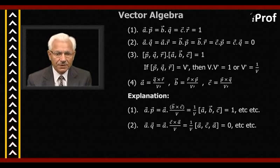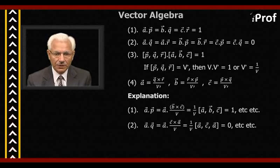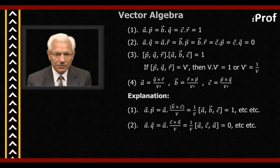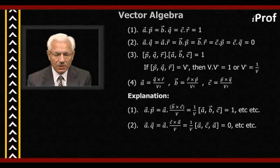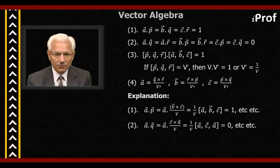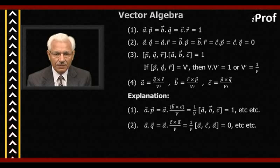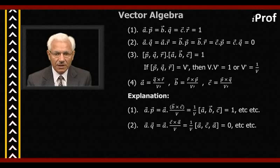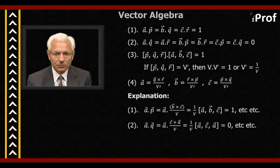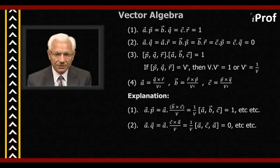The explanation of the above properties is as follows. First, A dot P equals — substituting the value of P — A dot (B cross C) divided by V. Pulling out one by V, we get A dot (B cross C), which becomes the triple scalar product of A, B, C, equal to one, because the triple scalar product of A, B, C is also equal to V. Similarly, the other three follow.